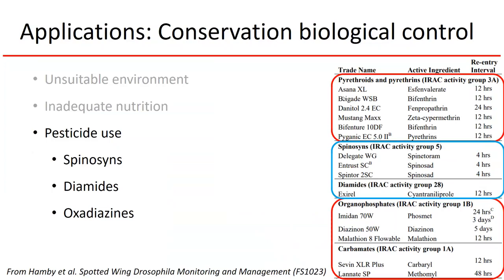If you do have to spray something that's more broad-spectrum, it's best to wait until the end of the season, which limits the potential for pest outbreaks later on because you've knocked out a lot of the natural enemies. Neonicotinoids can work too, as long as they're applied as a soil drench and not as a foliar application.